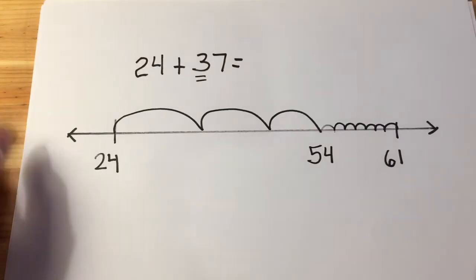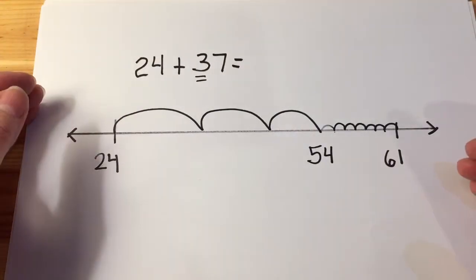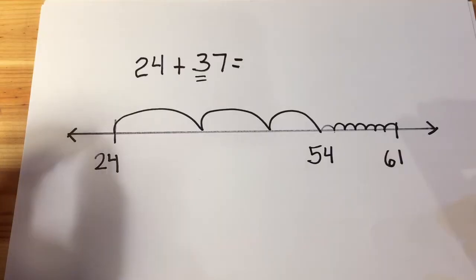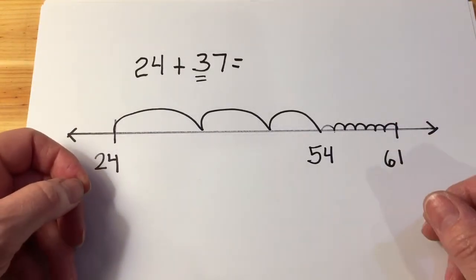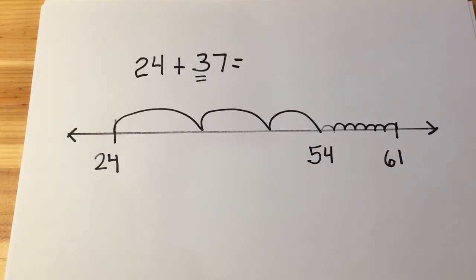That's how we use an open number line and why it is really just a visual bridge to that mental math strategy of moving, especially starting with the tens. I hope this helps you understand how and why we use an open number line. Thank you for watching Learn With Me.